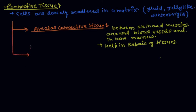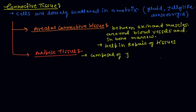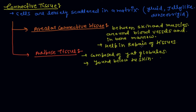The second type is adipose tissue. Adipose tissue is composed of fat globules. This tissue is found below the skin and provides insulation.